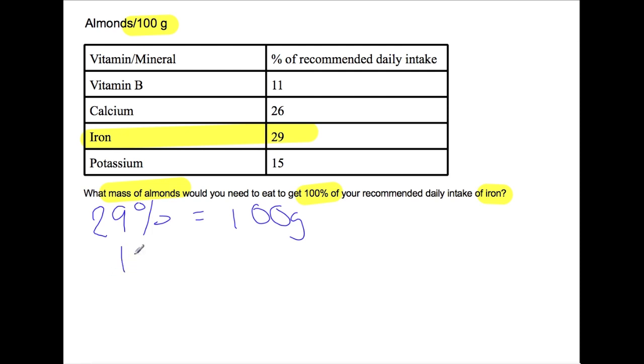So if we divide by 29 we can find out how we would get 1% of our daily intake. So you would need to eat 3.45 grams to get 1%. So if we then multiply by 100 to get 100% of our daily intake of iron, that will be 345 grams of almonds.